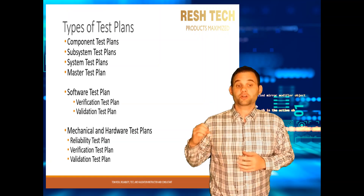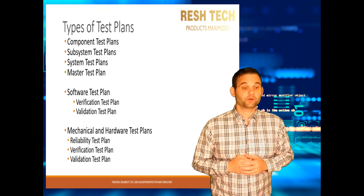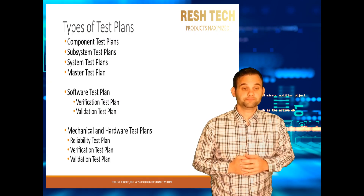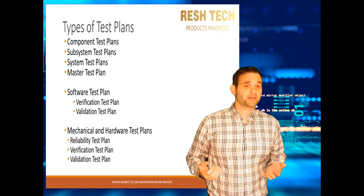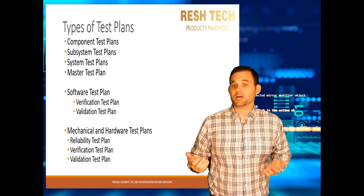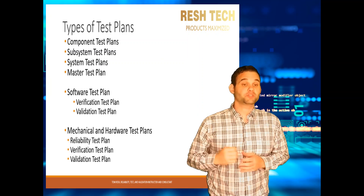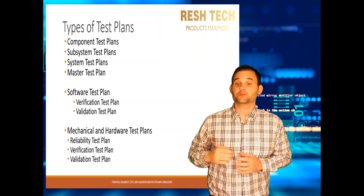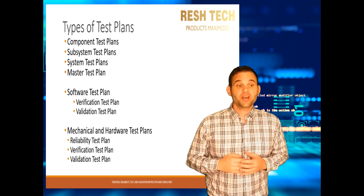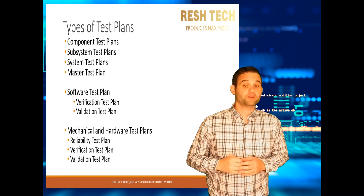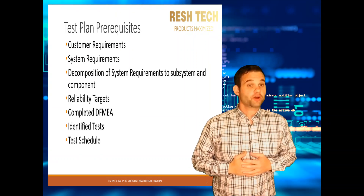Software failures are quality related and are not the result of usage over time, as with physical hardware and mechanical systems. For mechanical and hardware systems, test plans typically include verification, validation, and reliability testing. With hardware, you will verify that the mechanical and hardware subsystems operate as intended per technical specifications and are validated to the requirements of the customer and tested for lifetime performance and verification of warranty predictions and targets.